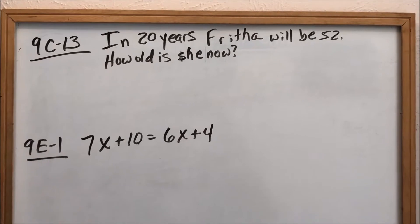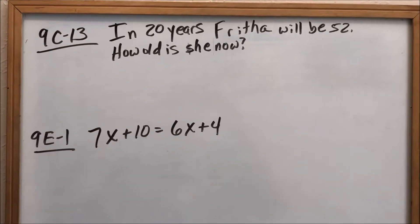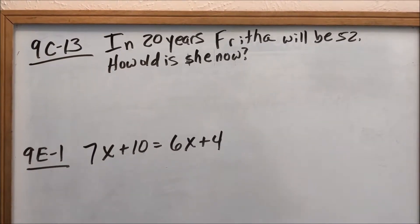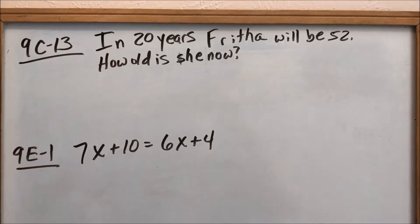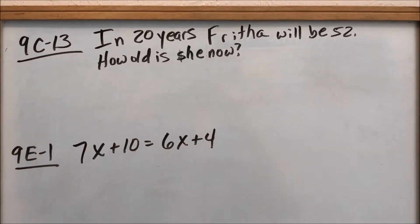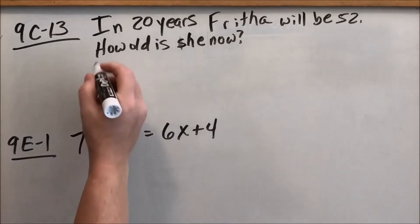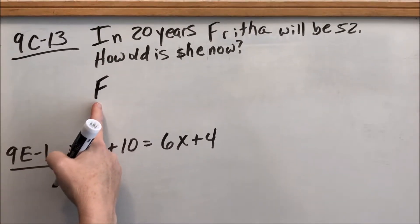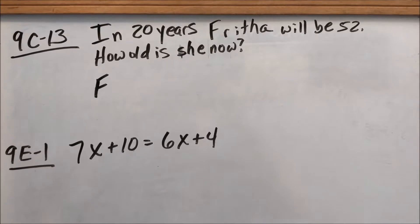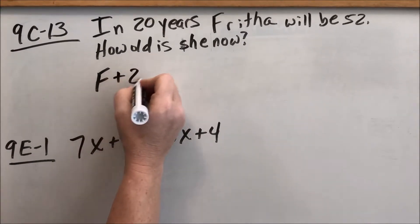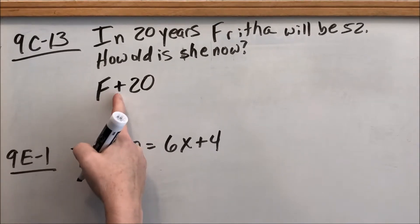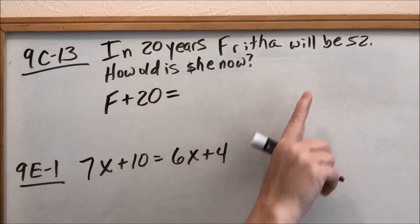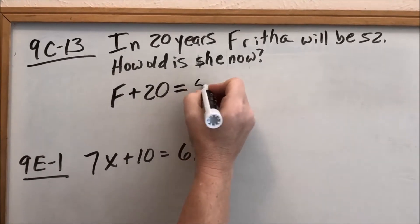Now we're looking at 9C13 — applying solving for unknowns to word problems. In 20 years, Fritha will be 52. How old is she now? We're looking for how old she is now, so we assign a variable: let's use F for Fritha, representing how old she is now. In 20 years means we add 20, and 'will be' is our equal sign, so F plus 20 equals 52.